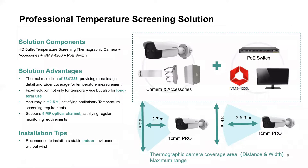We have three ranges: the professional range, eco range, and a handheld range. The professional range is offered in a bullet-style camera. Setup is straightforward — plug it into a PoE switch on the network, download the iVMS-4200 software, and you can witness real-time alarms sent to iVMS-4200 from the camera, as well as temperature readings overlaid on the stream itself.